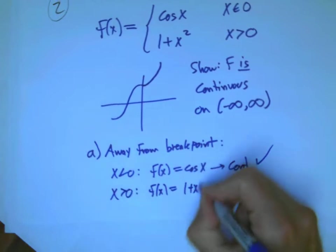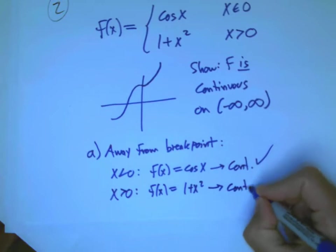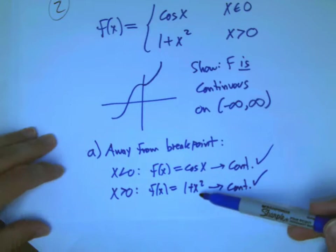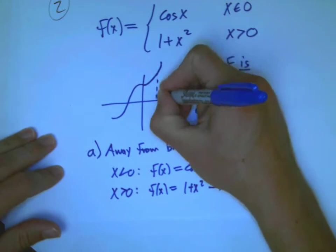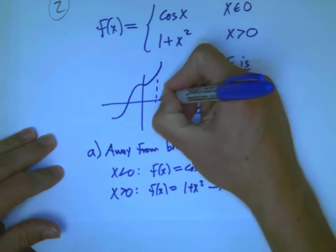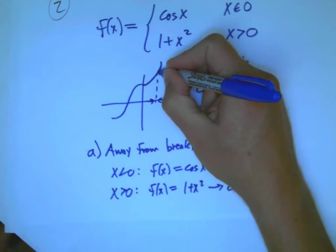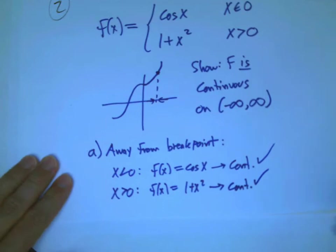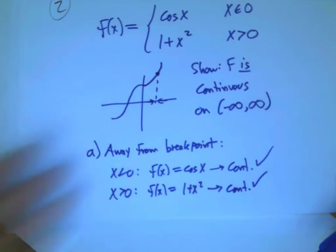If x is greater than zero, f of x is one plus x squared. That's a polynomial. It also is continuous. Another way to say that is that it has the direct substitution property. If you take the limit of the y values of this function, it's the same as the y value at that point.